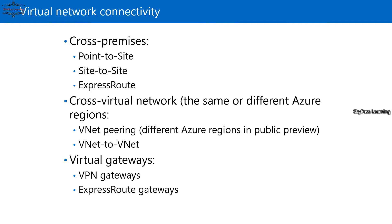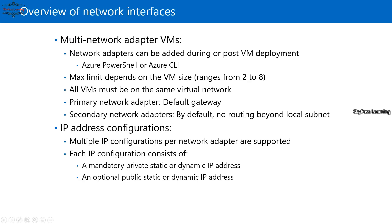For an overview of network interfaces — that is, multi-network adapter VMs — we have the IP configuration section. Network adapters can be added at the time of VM deployment or post-deployment using PowerShell, Azure CLI, or the portal. The maximum number of adapters depends on the VM size, ranging from 2 to 8, based on the virtual machine sizing.